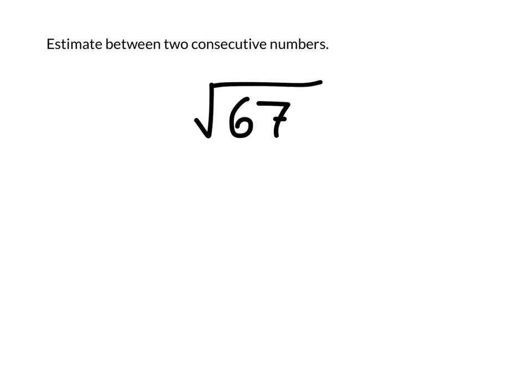So to figure out what is between the two consecutive numbers, we've got to look at perfect squares, which would be, for example,